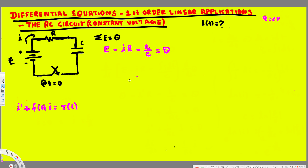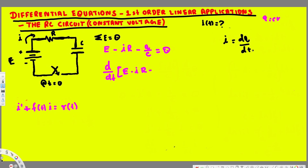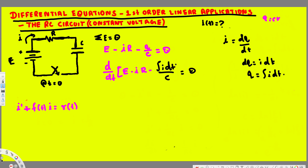In order to bring this into that pattern, we have to find the derivative: d/dt of E minus IR minus Q over C. Now, if you remember that I equals dQ/dt, then dQ is equivalent to I·dt, therefore Q is equivalent to the integration of I·dt. So instead of Q, we can replace it with the integral of I·dt.